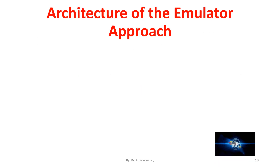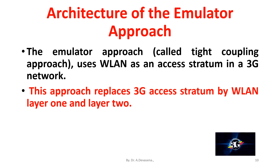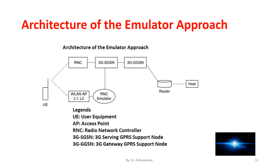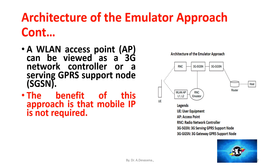The emulator approach is also called the tight coupling approach. It uses WLAN as an access stratum in a 3G network, replacing the 3G access stratum with WLAN layer 1 and layer 2. Here is a representation of the architecture of the emulator approach. A WLAN access point can be viewed as a 3G network controller or a serving GPRS support node, that is, SGSN. The benefit of this approach is that mobile IP is not required.